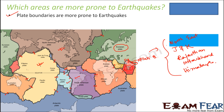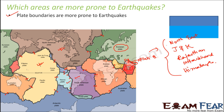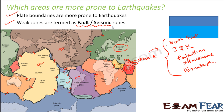The boundaries are the maximum impacted areas. Such regions are known as weak zones, fault zones, or seismic zones. The areas more prone to earthquakes are called fault zones or seismic zones. In every country, the fault zones are identified and some preventions are taken so that earthquakes cannot cause a lot of harm.